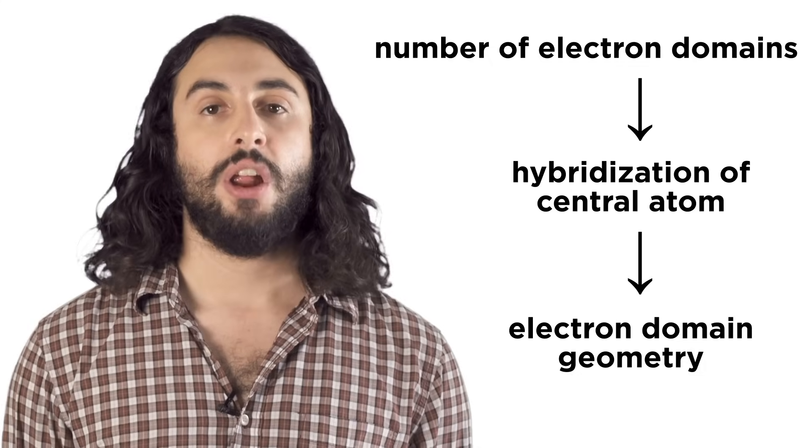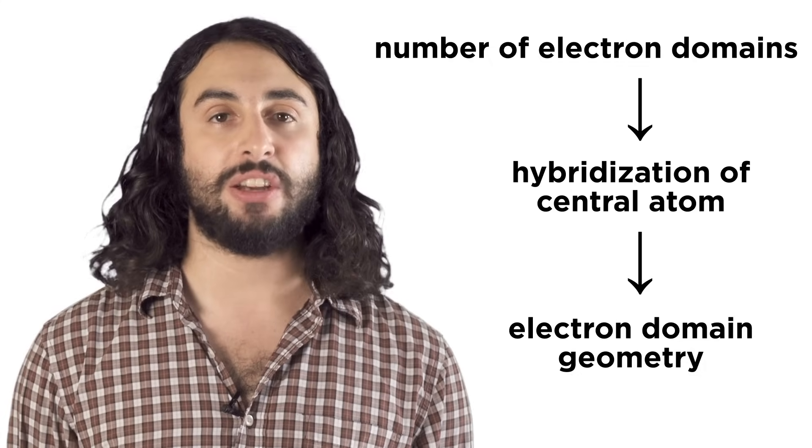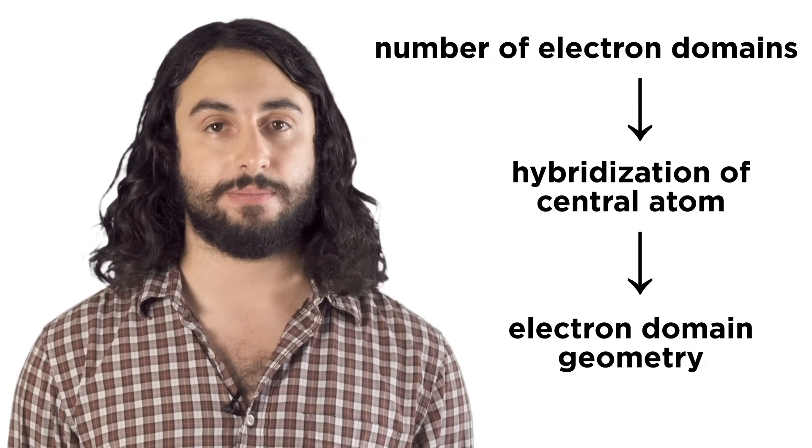So in order to figure out the electron domain geometry of a molecule, you just count up the electron domains. The number will tell you the hybridization and therefore the geometry. Besides covalent bonds to other atoms, lone pairs also count as electron domains.